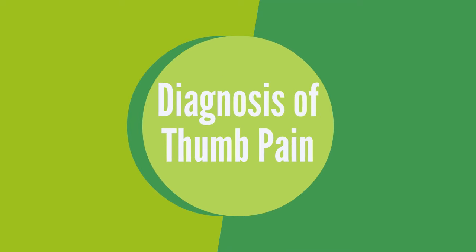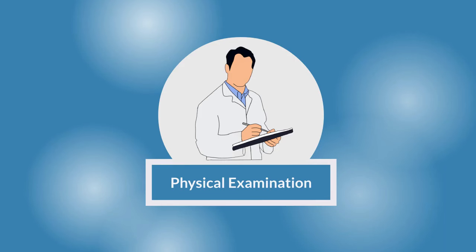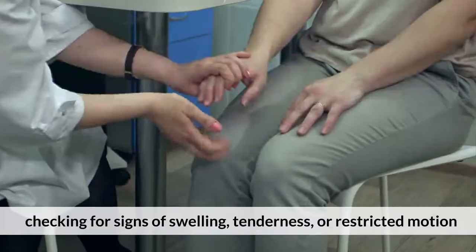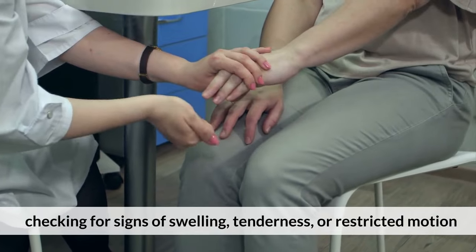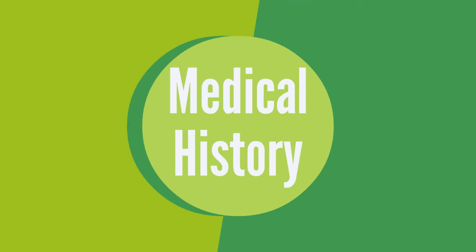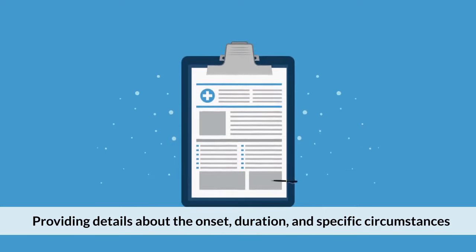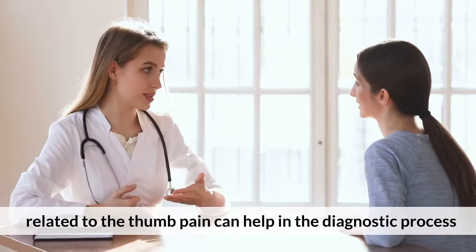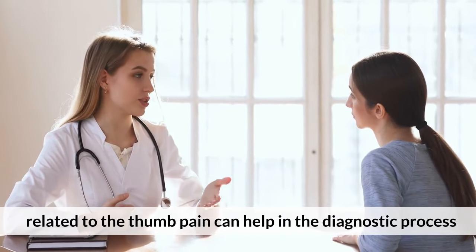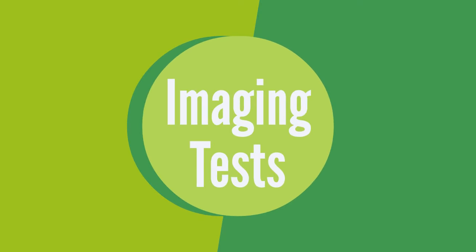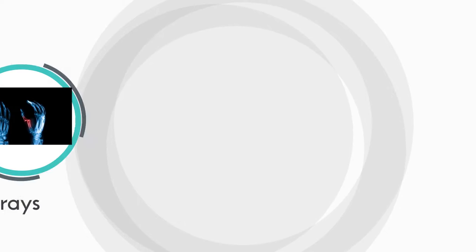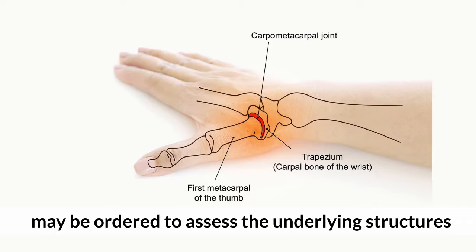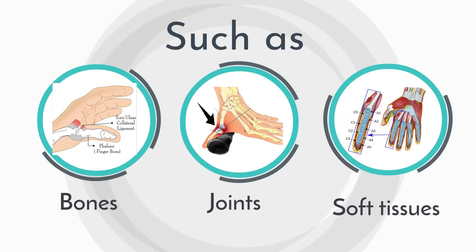Diagnosis of Thumb Pain. 1. Physical Examination. A healthcare professional will examine the thumb, checking for signs of swelling, tenderness, or restricted motion. 2. Medical History. Providing details about the onset, duration, and specific circumstances related to the thumb pain can help in the diagnostic process. 3. Imaging Tests. X-rays, MRIs, or ultrasound may be ordered to assess the underlying structures, such as bones, joints, or soft tissues.